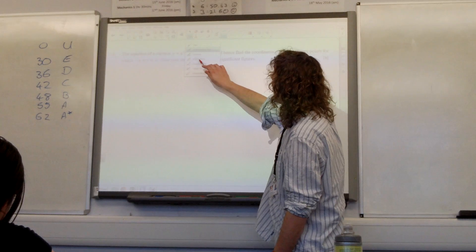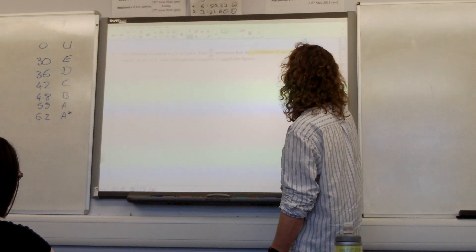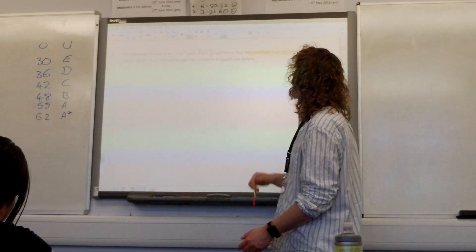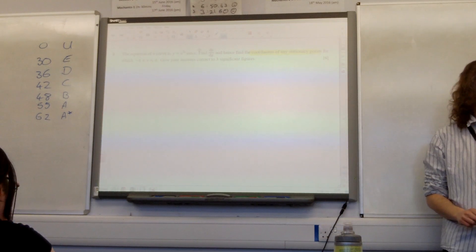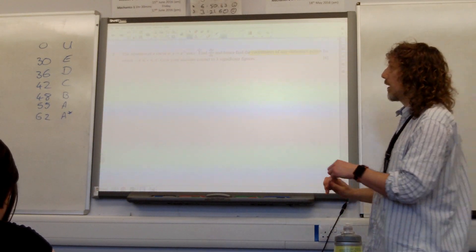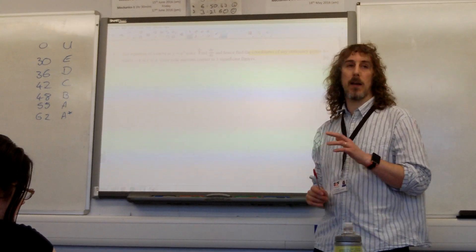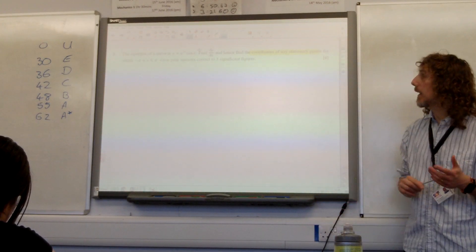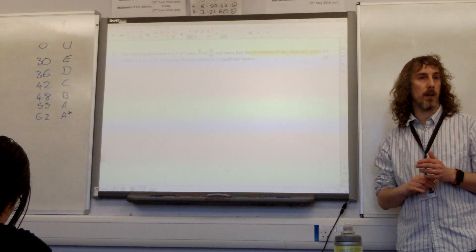and hence find, now this is crucial, hence find the coordinates of any stationary points. So not just the x value, you need to find the y value to go along with it. For which x is between minus π and π. And give your answers correct to three significant figures.